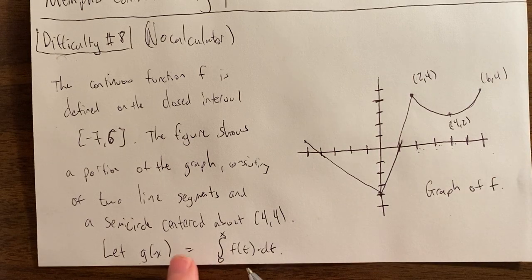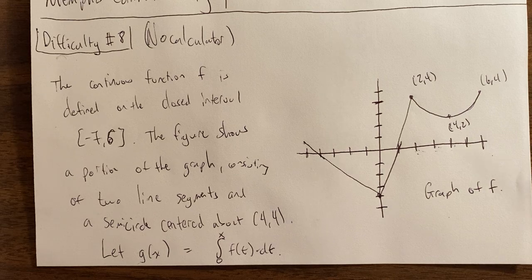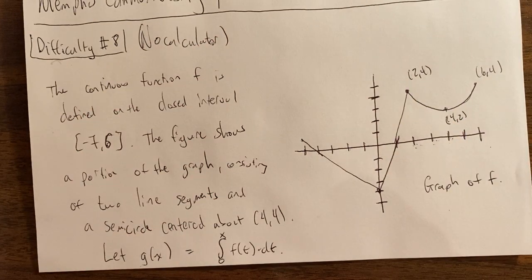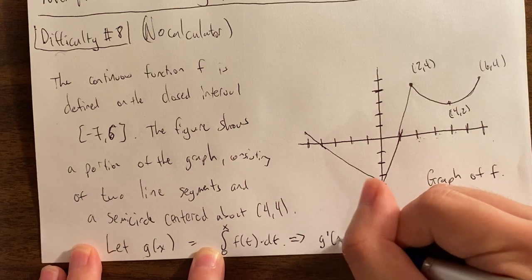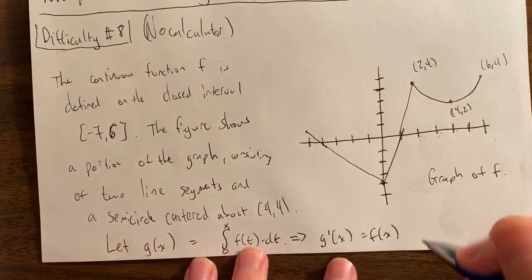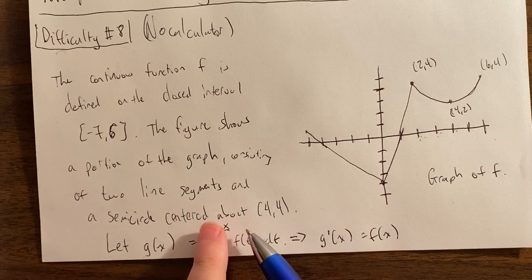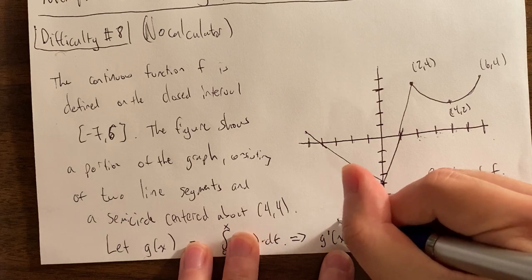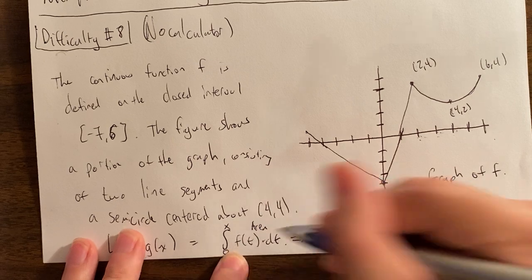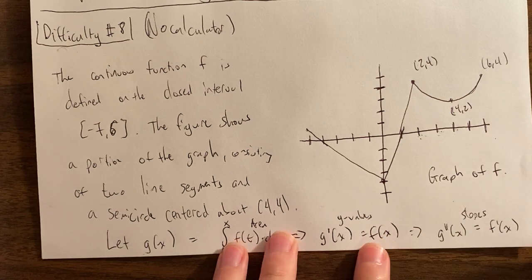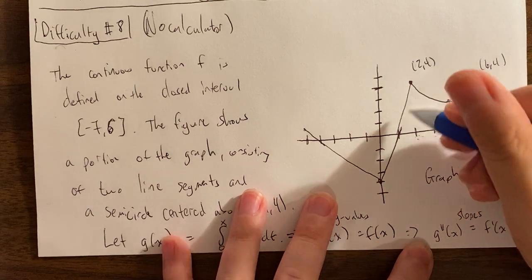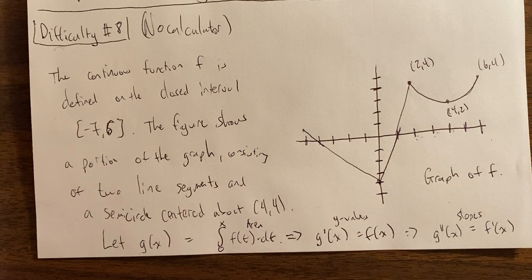Notice we are presented with a question where g of x is equal to an integral. We've done several of these in this video series. The one thing you want to do before you even start looking at the questions is write what g prime will be. So g prime of x equals f of x, and g double prime equals f prime — we might need that. G is going to be area values, g prime equals f of x gives y values, and g double prime of x gives slope values of the graph of f.